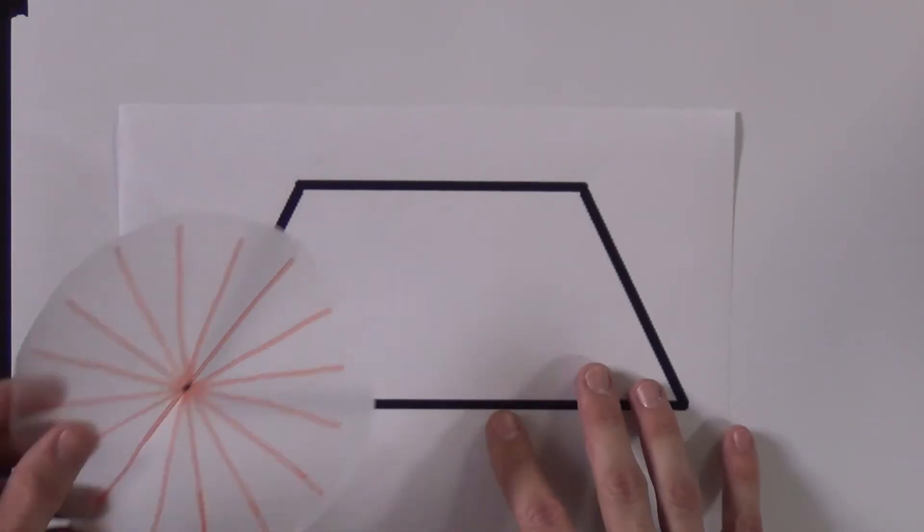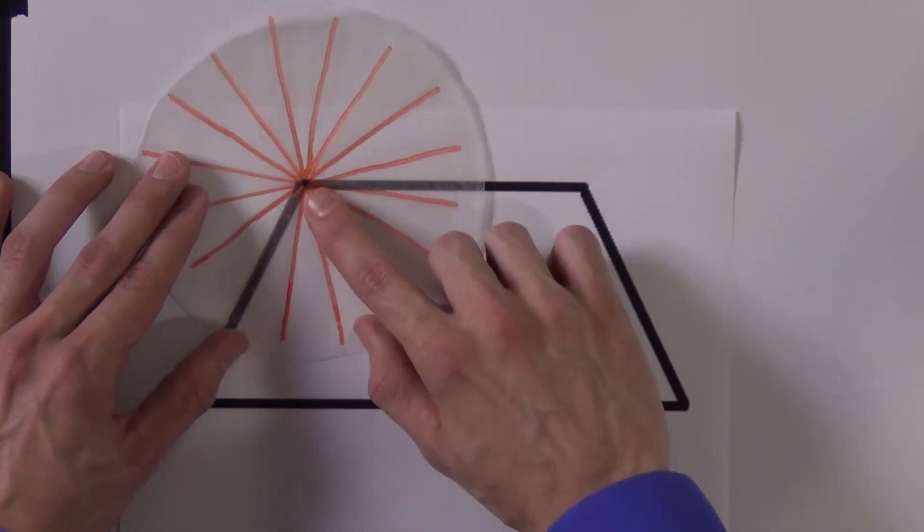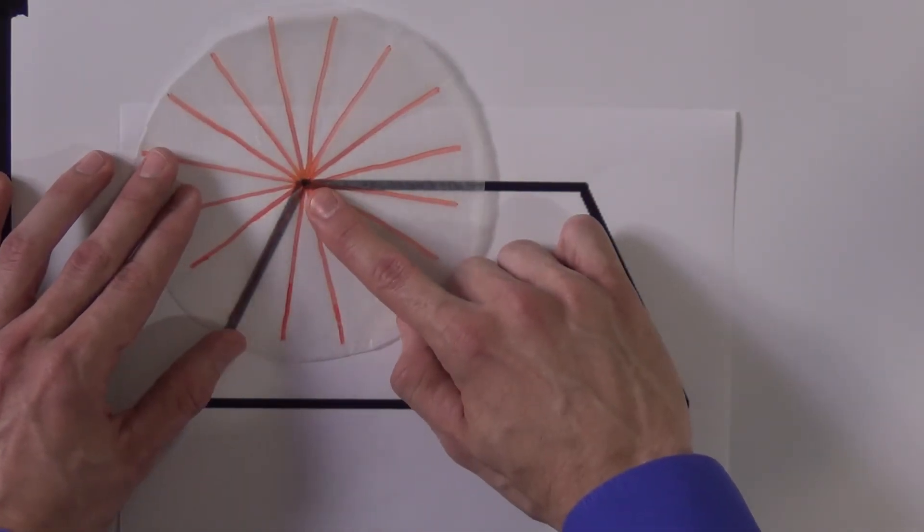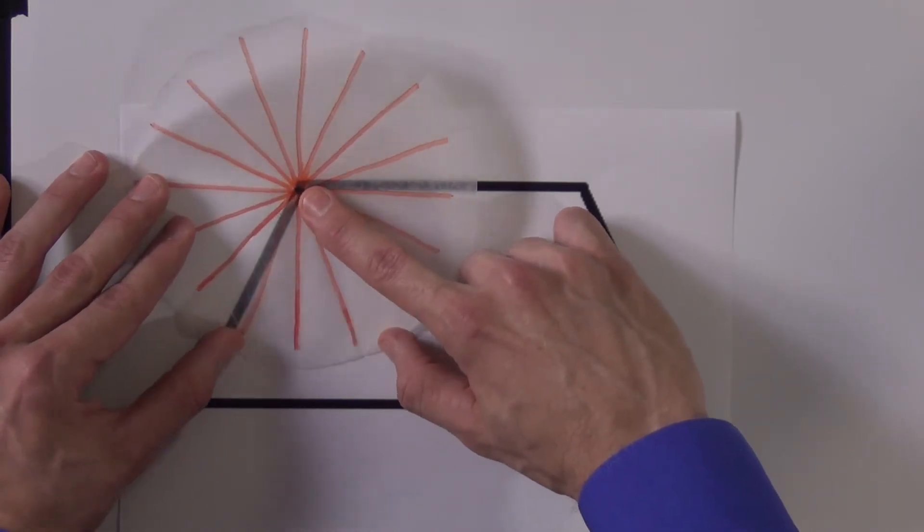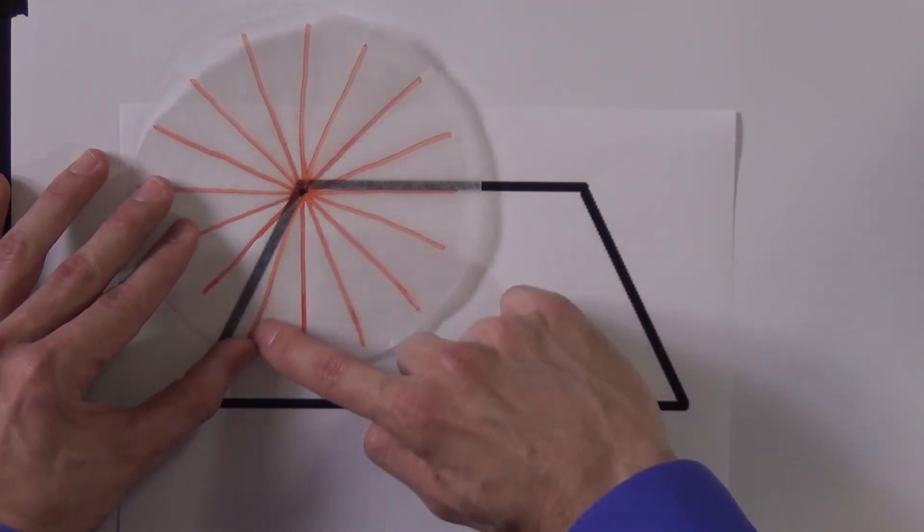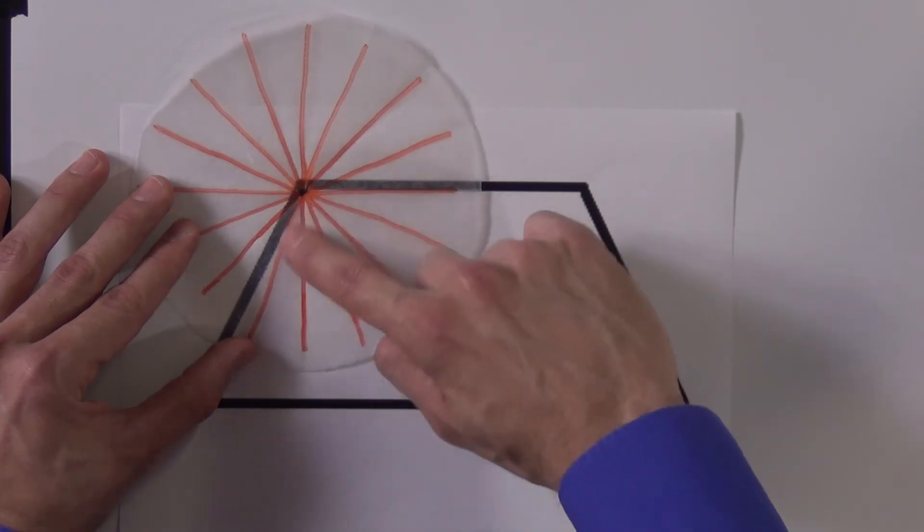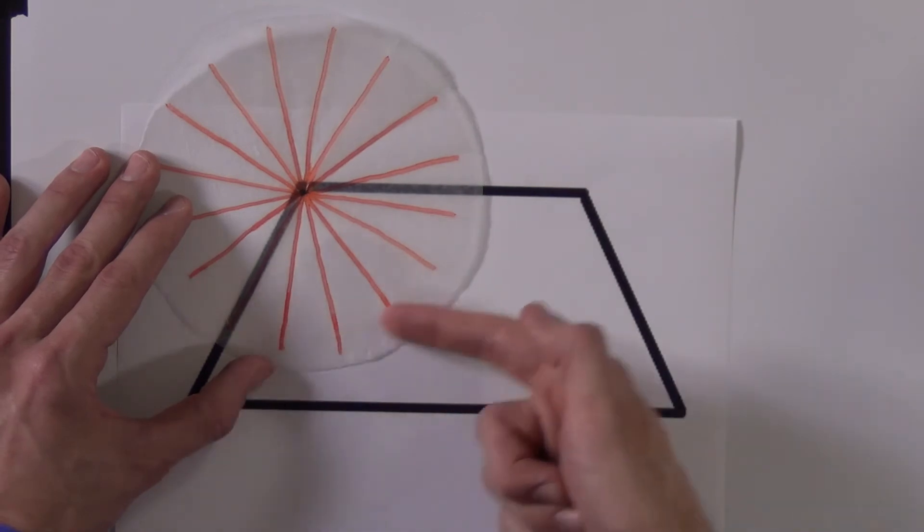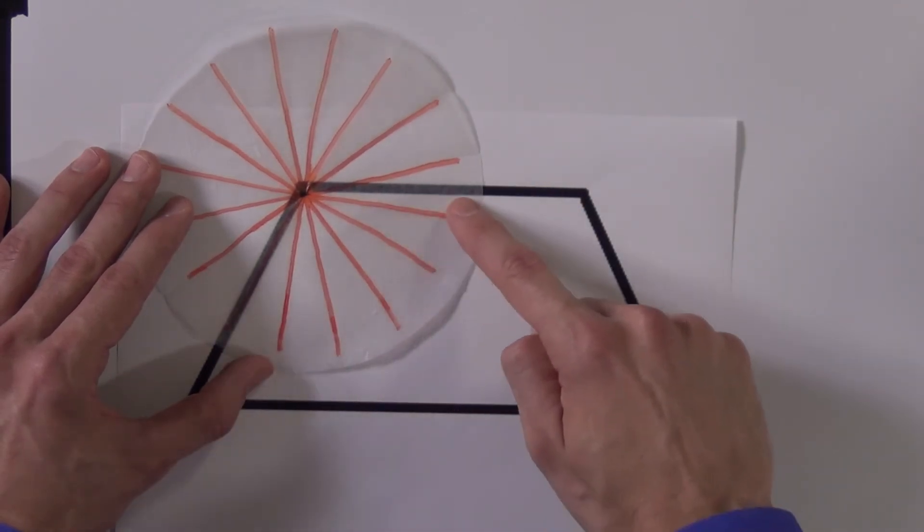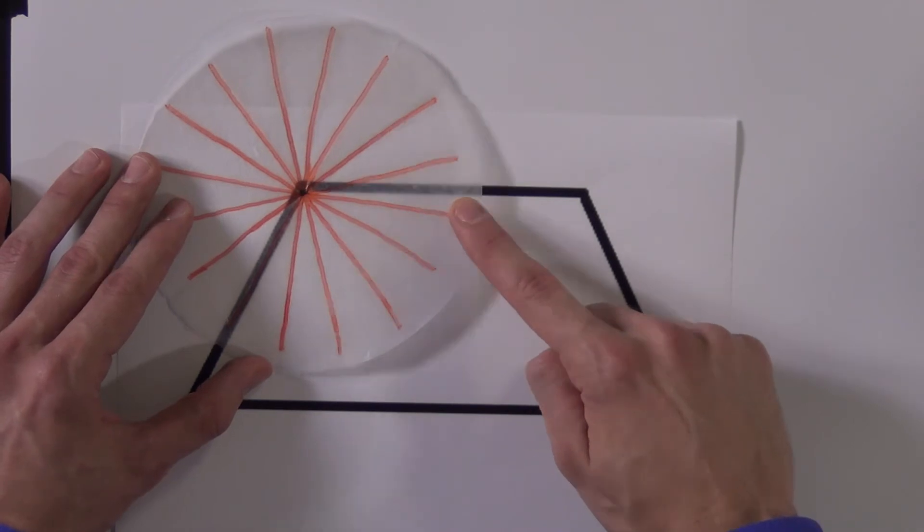So when your students are practicing with this, you really just want to reinforce lining up the center of the full circle protractor on one of the vertices, lining up one of the wedge creases along a side and then counting wedges. One, two, three, four, five, and a little bit more than five wedges.